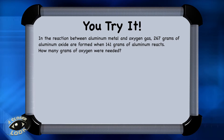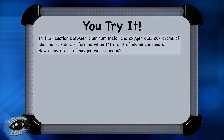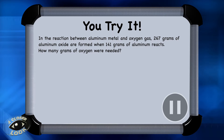Here's one for you to try. In the reaction between aluminum metal and oxygen gas, 267 grams of aluminum oxide are formed when 141 grams of aluminum reacts. How many grams of oxygen were needed? When you're ready, press pause, and then press play to check your calculation when you think you have the answer.